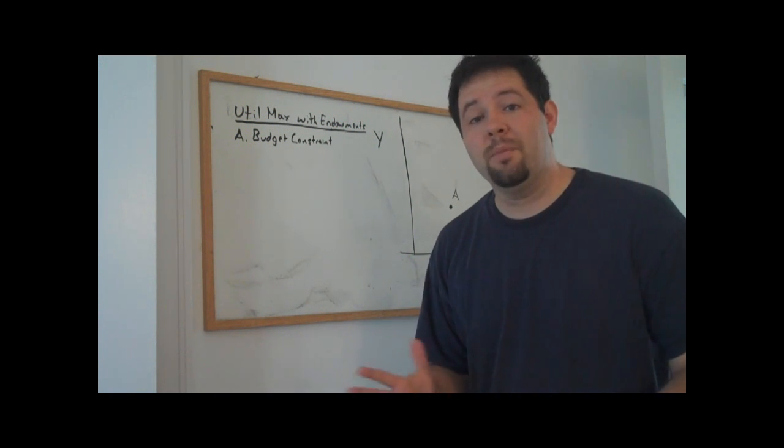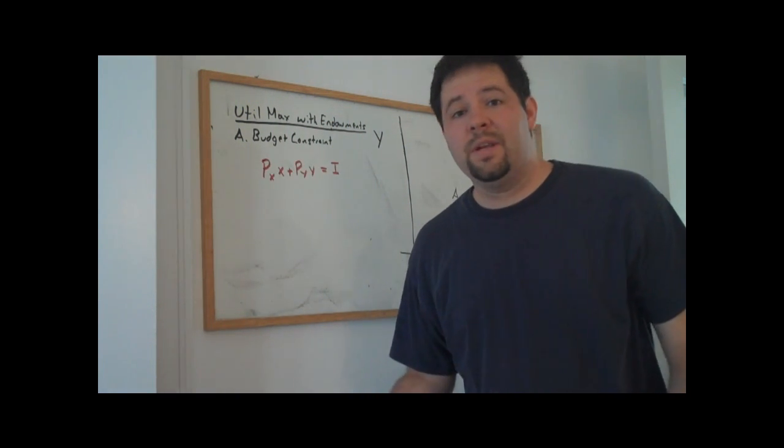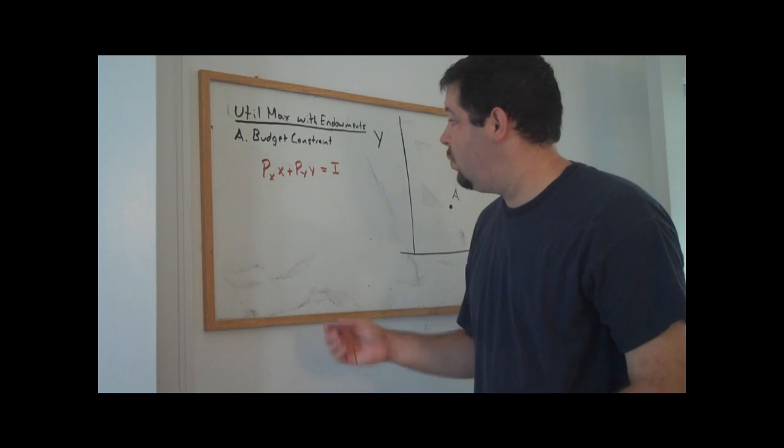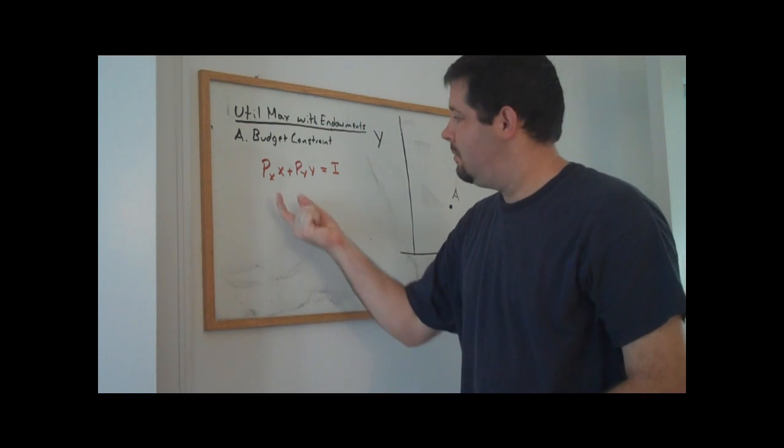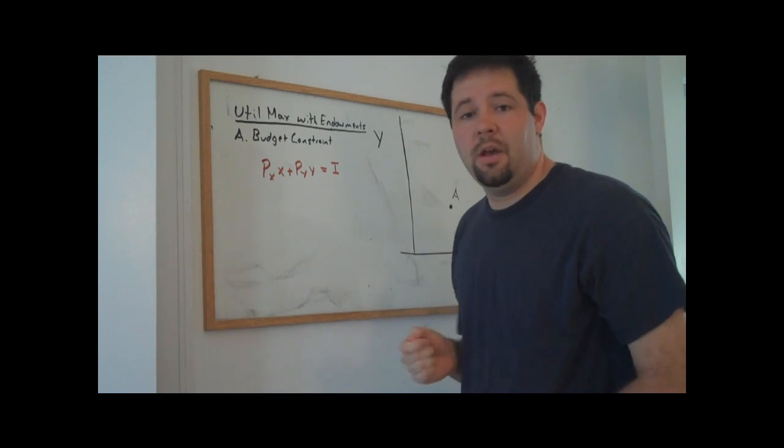Things aren't too much different than where we were before, so let's do a little review of what a budget constraint looks like when we have prices and income. As we discussed in lecture 7, the budget constraint is where the expenditures on X plus the expenditures on Y equal the income of the consumer.